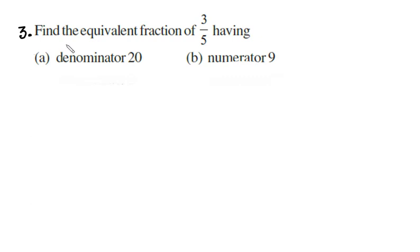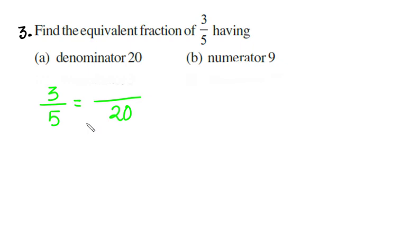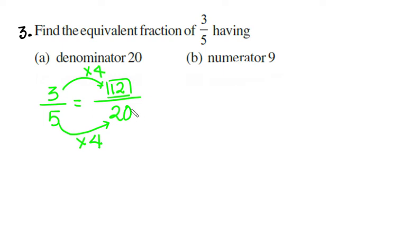Example 3: find the equivalent fraction of three fifths where the denominator must be 20. Three fifths is equivalent to what fraction with denominator 20. To go from denominator 5 to 20, we multiply by four. So we also multiply the numerator 3 by four, giving us 12. The equivalent fraction is twelve twentieths.